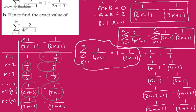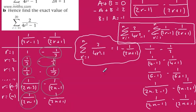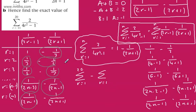Hence, find the exact value of the sum from r equals 11 to 20. Going back to FP1, this can be done as follows: the sum from r equals 1 to 20 minus the sum from r equals 1 to 10. Be careful — we're knocking off the first 10 terms, don't knock off the 11th. To get from 11 to 20, we do sum to 20 minus sum to 10.